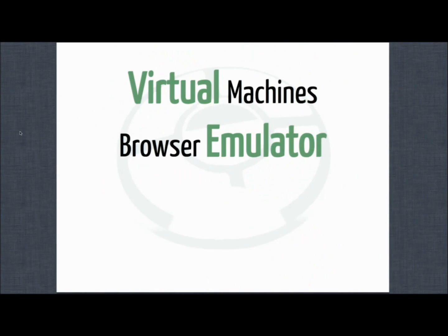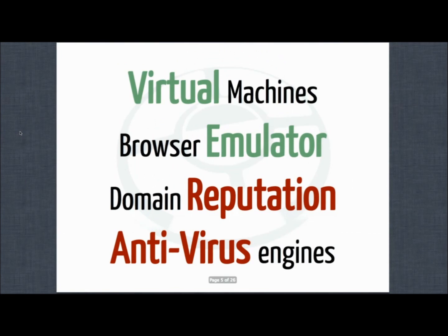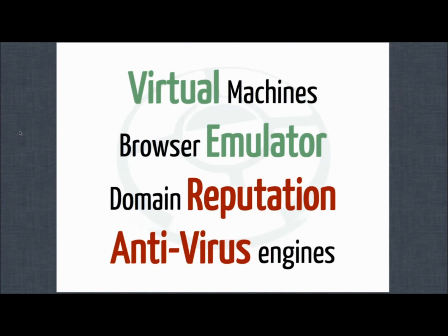What we've done so far: we have virtual machines, we have browser emulation, we have domain reputation and antivirus engines to determine if a domain is malicious or not. All we do right now is search for threats and if it's malicious, we block it — so it's reactive. We don't go forward and say, let's stop them before they compromise the machine.